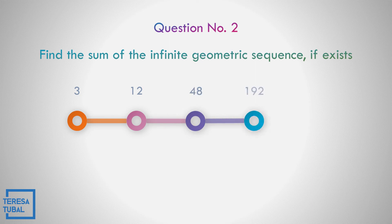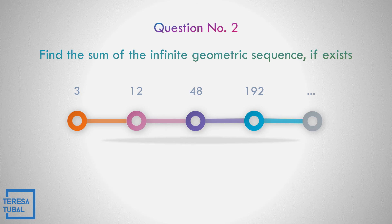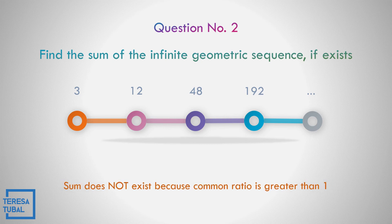Question number 2. Find the sum of the infinite geometric sequence if it exists: 3, 12, 48, and 192. The sum does not exist because the common ratio is greater than 1. 12 divided by 3 is 4, and 4 is greater than 1.